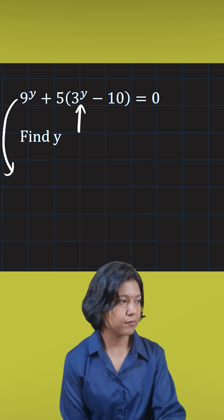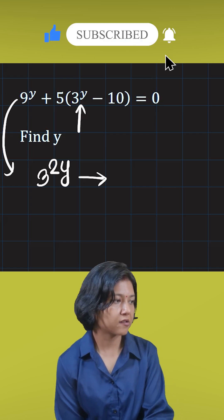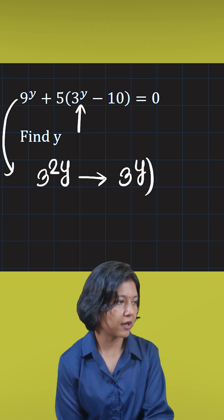Note that 9, being a product of 3 and 3, I can write it as 3 squared y, or simply I can also manipulate this into 3y whole squared.